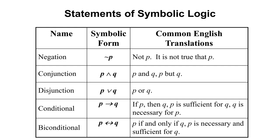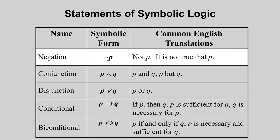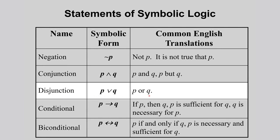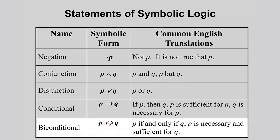So far we have discussed negation, conjunction, disjunction, conditional, and biconditional. For negation, if we have a statement P and you want to negate it, we use 'not P' or 'it is not true that P.' For conjunction, the symbol means 'and,' so this means 'P and Q' or 'P but Q.' For disjunction, we use the 'or' symbol. For the conditional statement, we have 'if P then Q,' 'P is sufficient for Q,' and 'Q is necessary for P.'